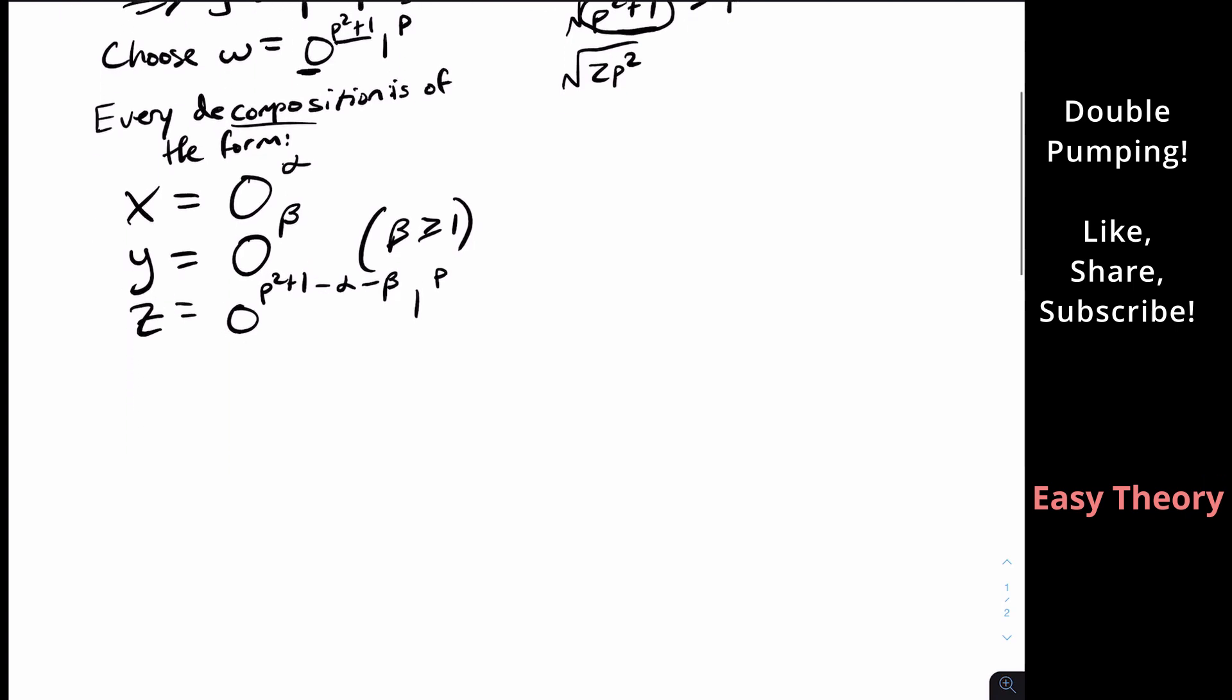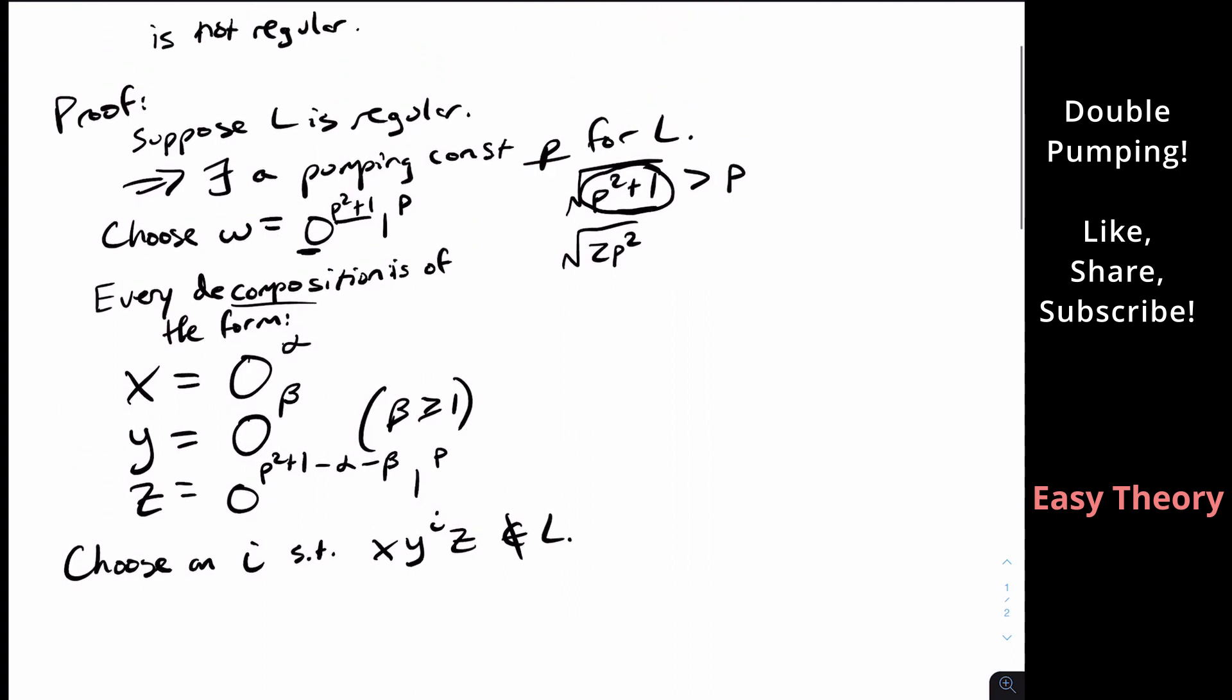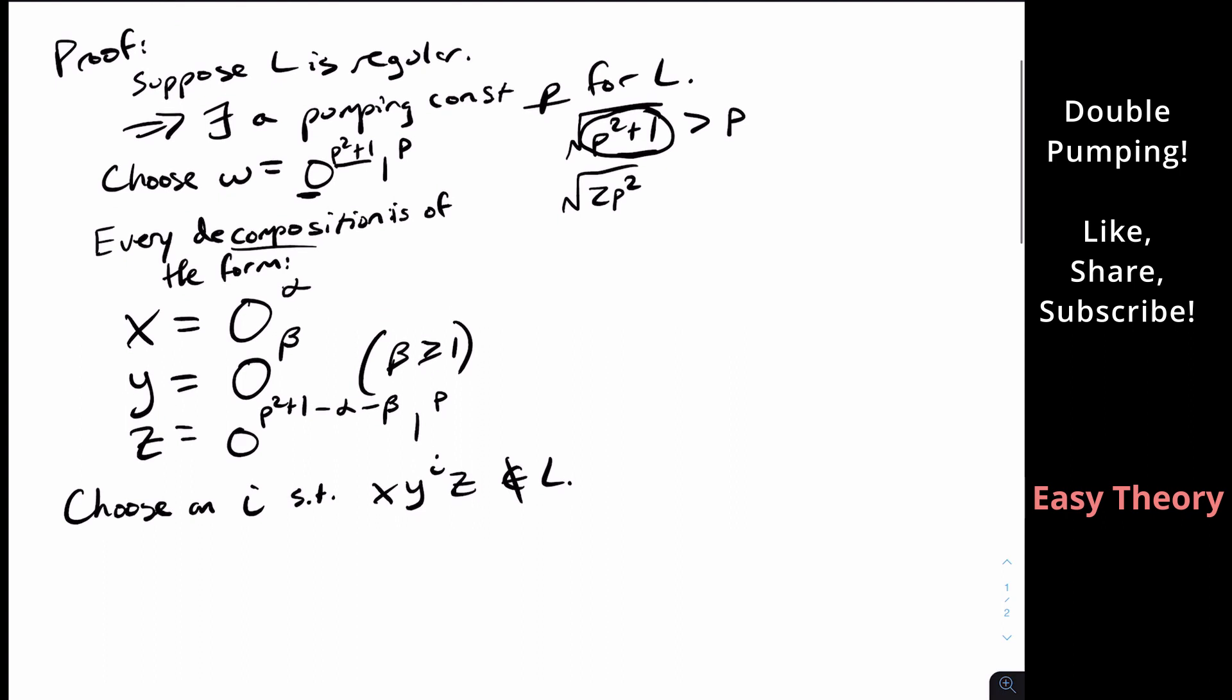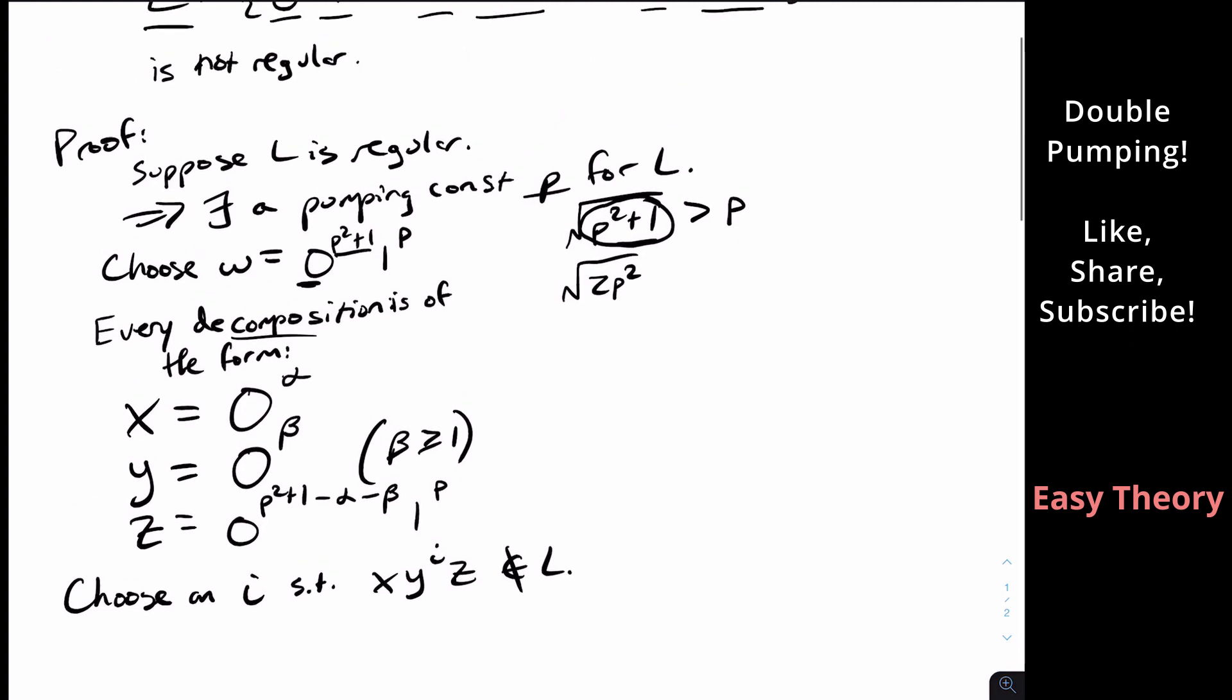So let's see. Well, what can we do here? Well, we got to choose an i such that X, Y to the i, Z is not in L, because the pumping lemma says that no matter which i you pick, you always stay in the language. But if we show that there's a value in i that we leave the language, then that'll give us the desired contradiction to show that this is not regular.